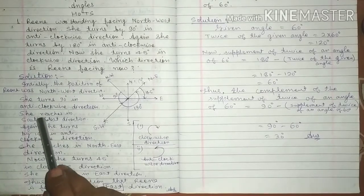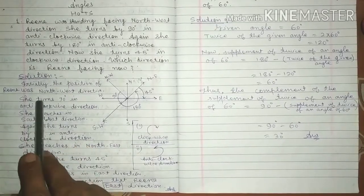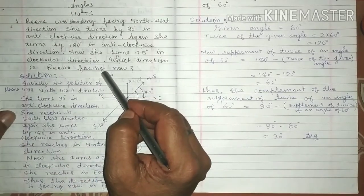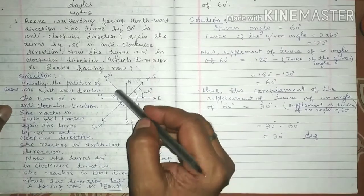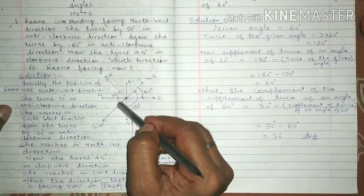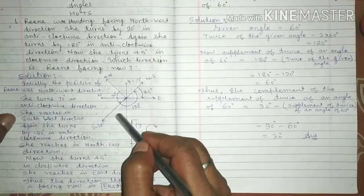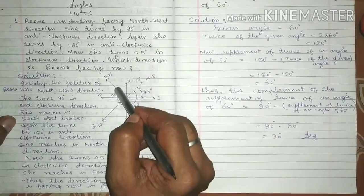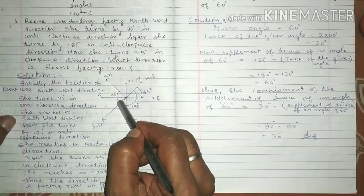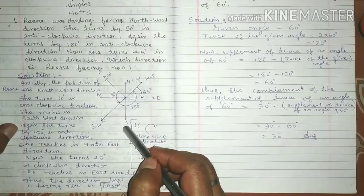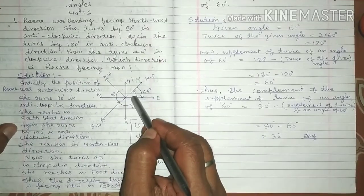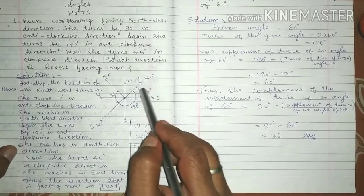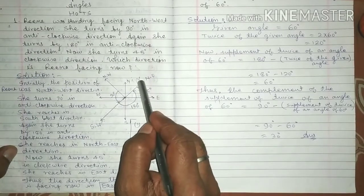Initially, the position of Rina was north-west direction. She turns 90 degrees in anti-clockwise direction and she reaches south-west direction. Again she turns by 180 degrees in anti-clockwise direction and she reaches north-west direction.